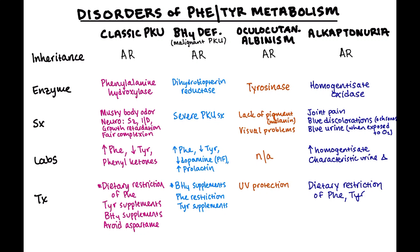Alkaptonuria has a pretty dramatic and unique presentation. The enzyme is homogentisate oxidase. Patients accumulate homogentisic acid in their connective tissue, causing joint pain and blue discoloration (ochronosis). The urine comes out straw-colored as usual, but when exposed to oxygen it turns an inky blue color. Labs show elevation of homogentisate. Treatment is dietary restriction of both phenylalanine and tyrosine, since those are upstream of homogentisate.